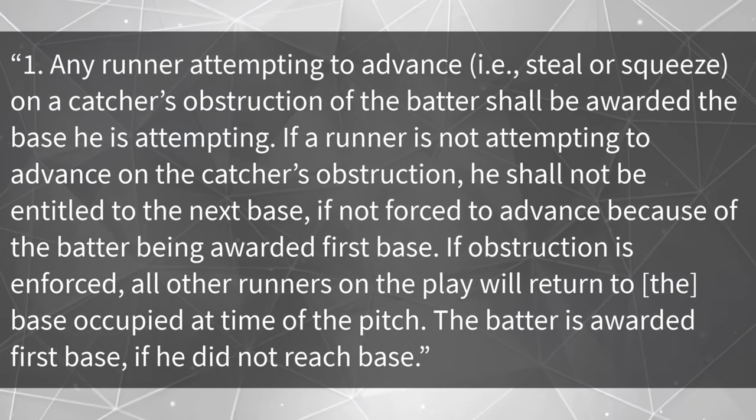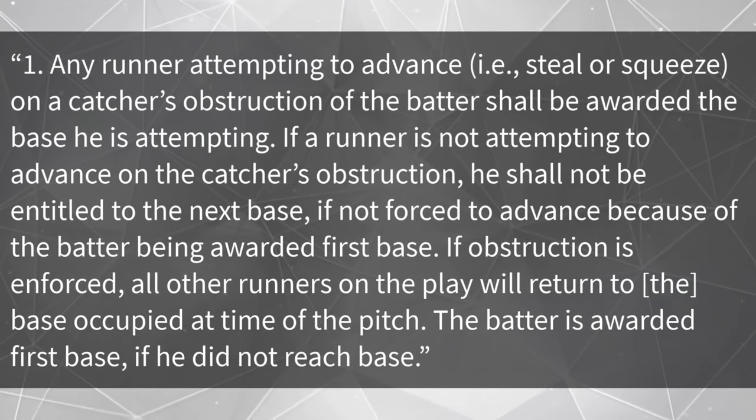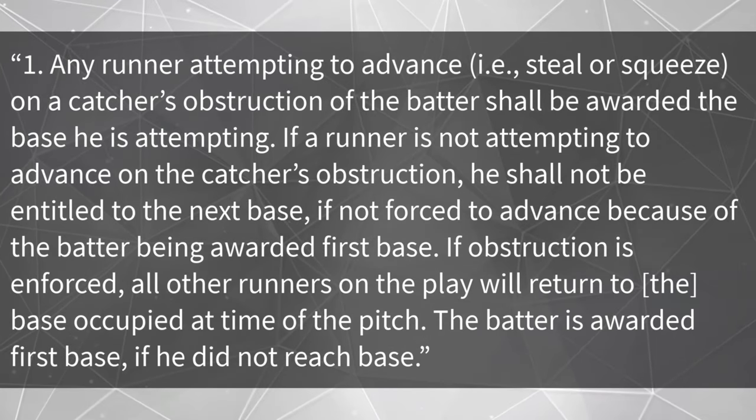If obstruction is enforced, all other runners on the play will return to the base occupied at the time of the pitch, and the batter is awarded first base if he did not reach base. The breakdown is fairly simple: all runners return to their base at the time of pitch unless they are forced to advance by the batter being awarded first, or if they were stealing, in which case we give them the base they were advancing to. Important to note: when we award bases for obstruction, the award must occur regardless of where other runners are on base. So in a situation with runners on second and third, if R2 steals while R3 does not, and we have catcher's obstruction, the award of that base to R2 will result in awarding home to R3.